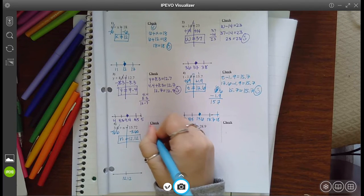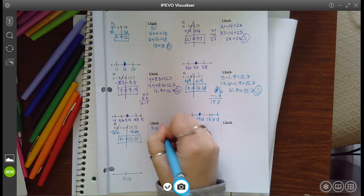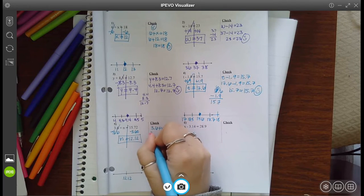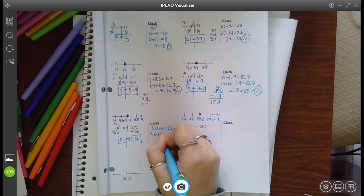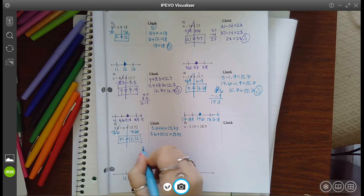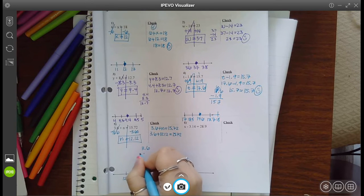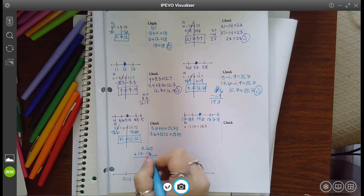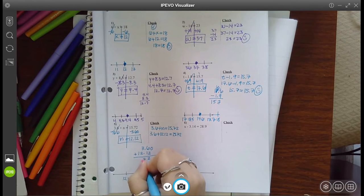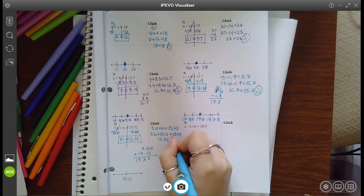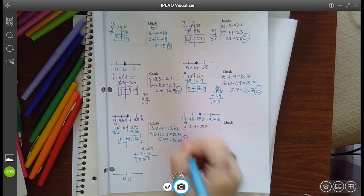Let's see if that's right. So 3.6 plus n equals 15.72. I think that n is 12.12. So that's what I'm going to replace my variable with. And when I check that, line up your decimals. So let's put a 0 place marker there. That's 2, 7, 5, and 1. So 15.72, which is equal to the other side. So true statement,